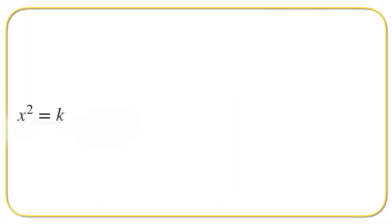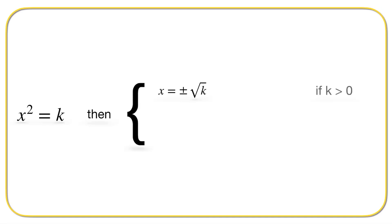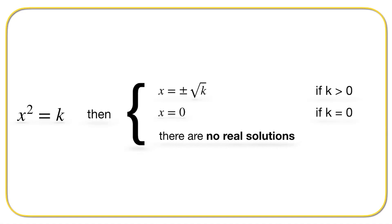Therefore, when x squared is equal to k, then the following must be true: x is equal to plus or minus the square root of k, if k is greater than zero. And x is equal to zero if k is equal to zero. And finally, there are no real solutions if k is less than zero.